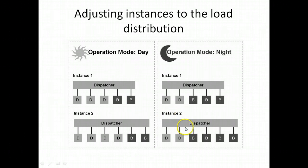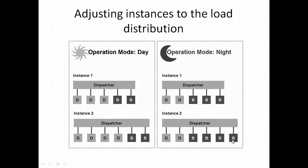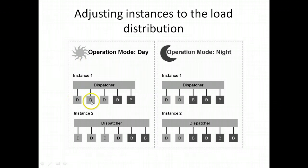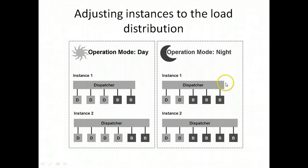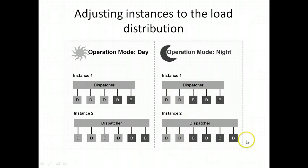In instance two during night mode, there are two dialogue and four background work processes available. So with two instances configured, during the day there are seven dialogue work processes and four background work processes total. During the night, there are four dialogue work processes and seven background work processes total.